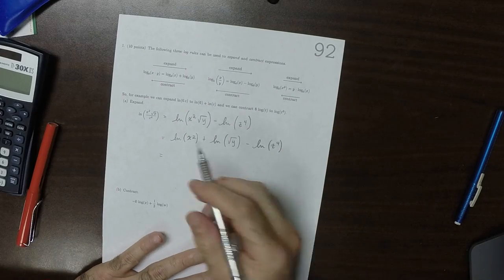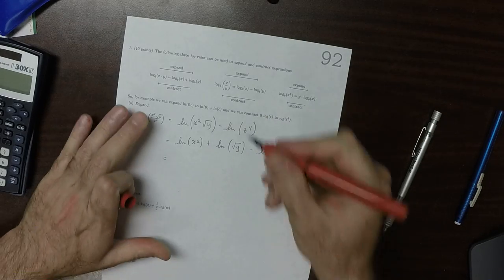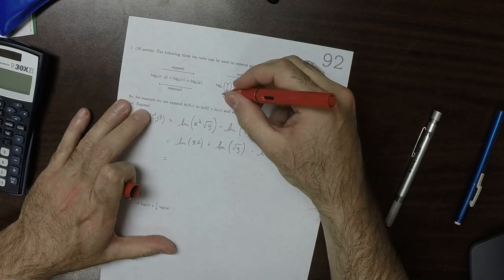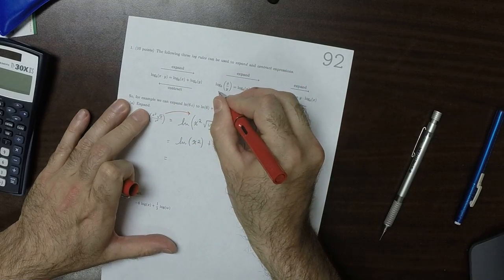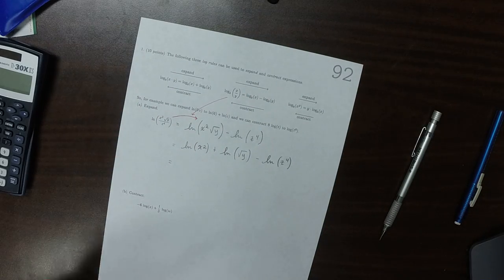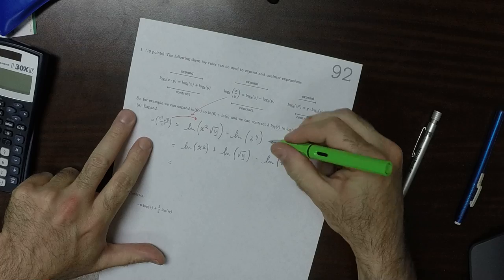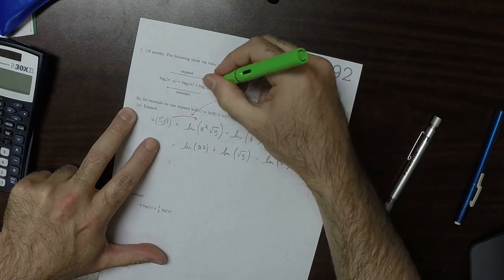And then those can be expanded. So this rule, what I used here, to go from here to here, was that rule. And what I used to go from here to here was this rule.